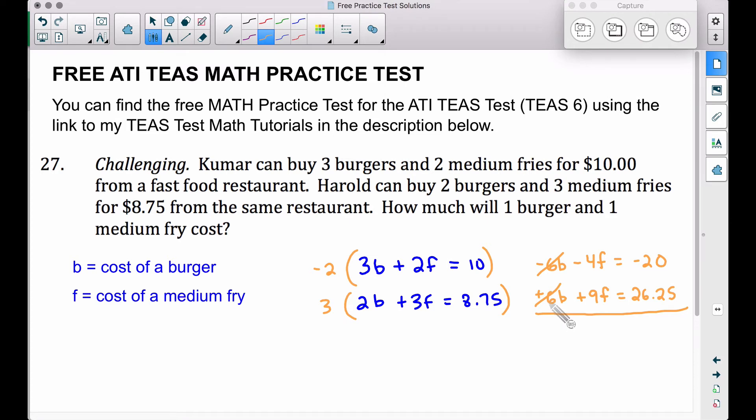Now there are multiple ways to solve a system of equations. I encourage you to Google system of equations. Type in the word elimination as well. You'll see tons of resources available for that if you're interested in learning more. But anyway, here, that's what I'm doing. I'm getting rid of my Bs. Now let's combine the fs. Negative 4f plus 9f is 5f and combining the negative 20 and the 26.25, that's negative 20 plus 26.25, we have 6.25. We can solve for f by dividing both sides by 5 and if we take 6.25 divided by 5 we get 1.25. Therefore f, the cost of a medium fry is $1.25.